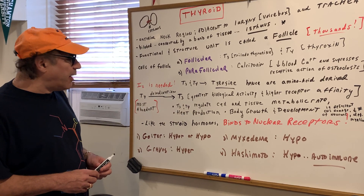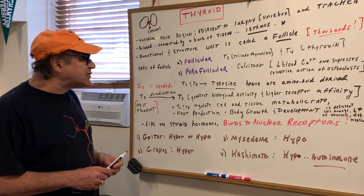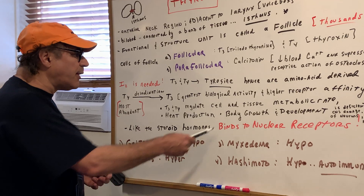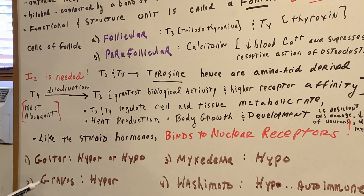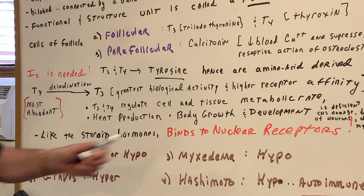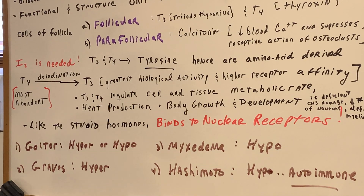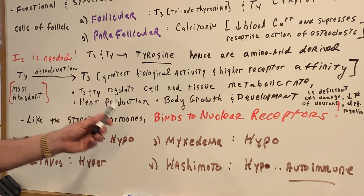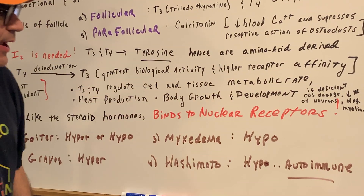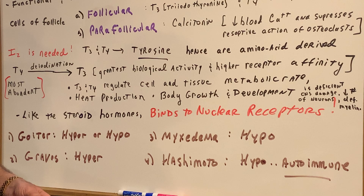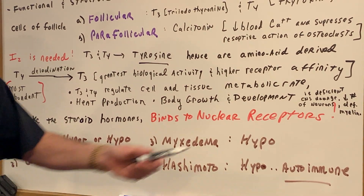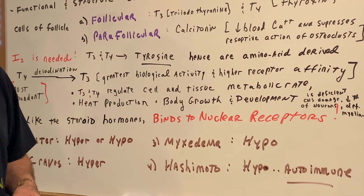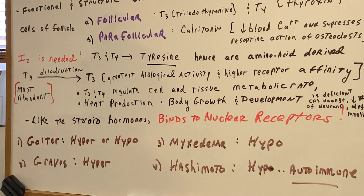T3 and T4 are involved in regulating the cell and tissue metabolic rate and heat production. Thyroid hormones are also involved in body growth and development. Low amounts of thyroid hormone can cause CNS damage, decreasing the number of neurons and causing defective myelination, making these hormones critical in early growth and development.